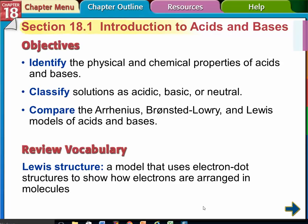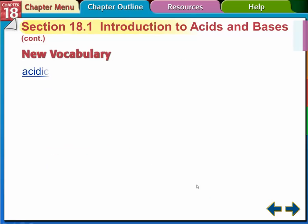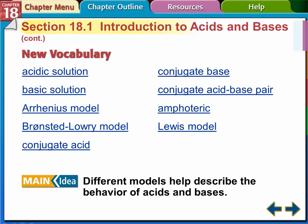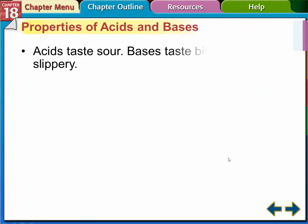This is the start of Chapter 18, Introduction to Acids and Bases. We're going to identify some physical and chemical properties of acids and bases, classify them as acidic, basic, or neutral, and mostly we're going to compare these models: the Arrhenius model, the Bronsted-Lowry, and the Lewis model of acids and bases. The main idea here is that different models help describe the behavior of acids and bases.